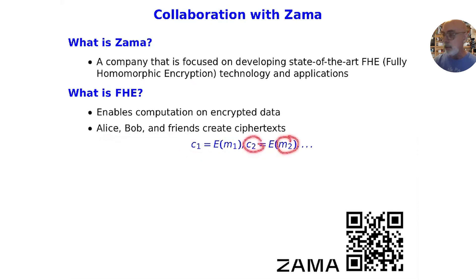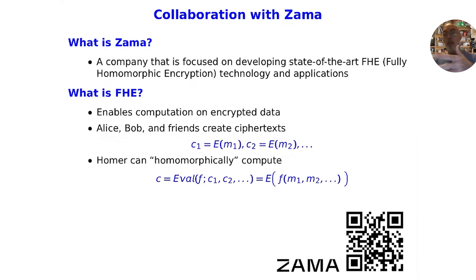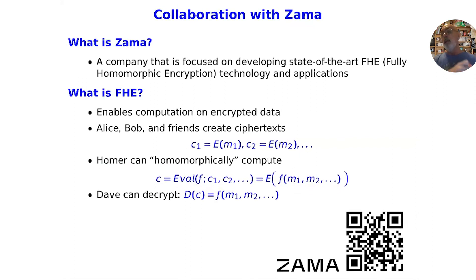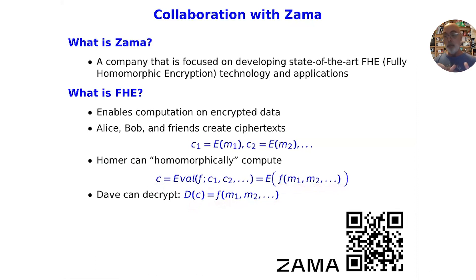These ciphertexts can be given to another party, Homer, who can homomorphically compute on them. Homer just has the ciphertexts C1, C2, and so on, and has some function F that he wants to compute. He applies a special algorithm Eval to this data, and what he gets out is an encryption of the plaintext, which is F evaluated at M1, M2, and so on — all without having any clue as to what the plaintexts are. Later, another party Dave, who has the secret key that allows for decryption, can take such a ciphertext C, decrypt it, and get this value F evaluated at M1, M2. He doesn't learn what M1 or M2 are — he just learns some function of this data.